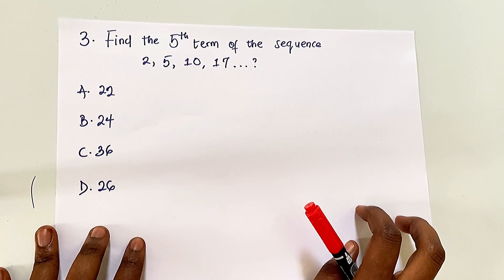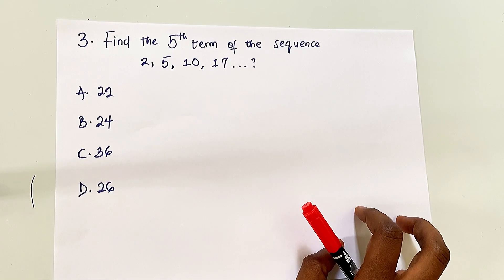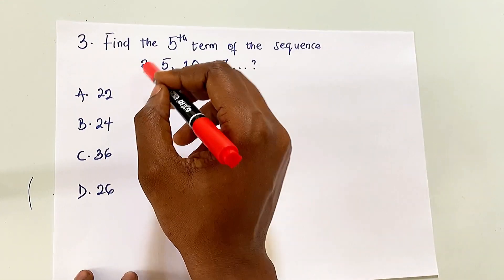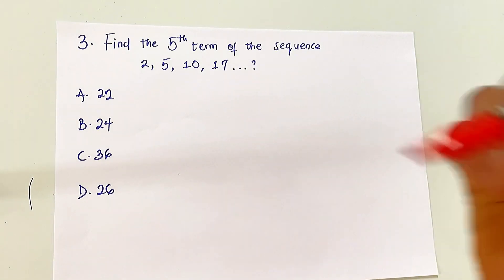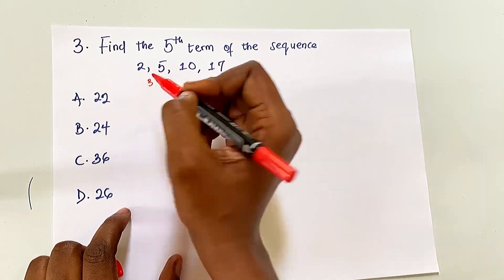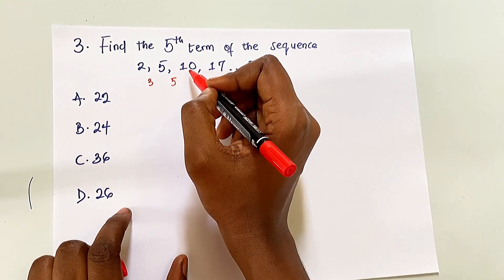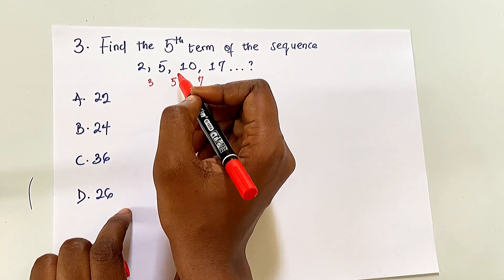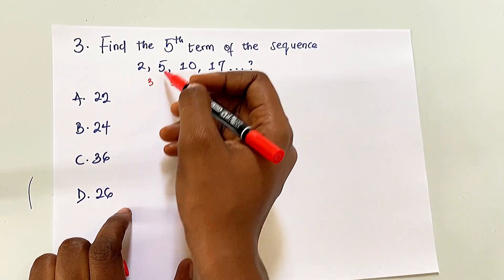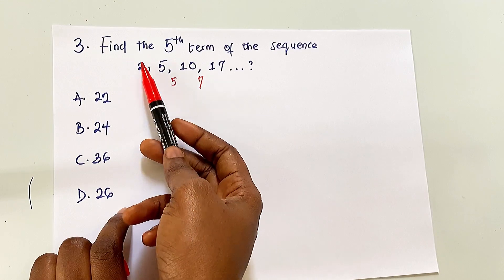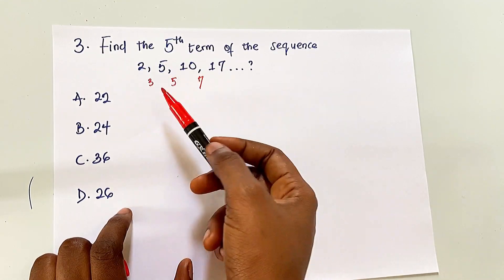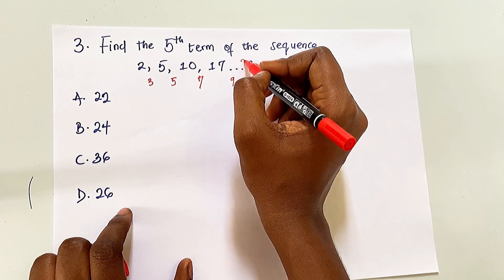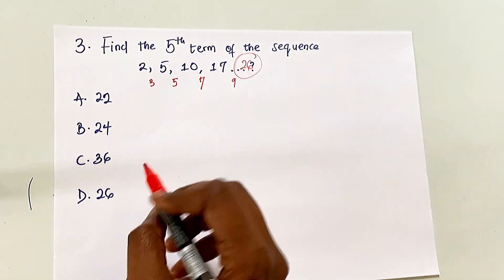Question 3: Find the 5th term of the sequence. This question doesn't specify AP or GP, so we determine the pattern. The sequence appears to be 2, 5, 10, 17... The differences between terms are 3, 5, 7 — increasing by 2 each time. So the next difference is 9, and the 5th term is 17 + 9 = 26.